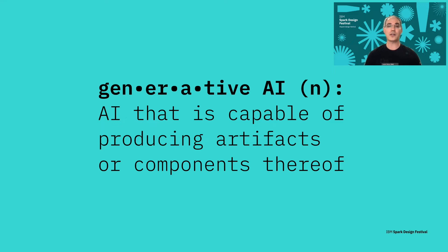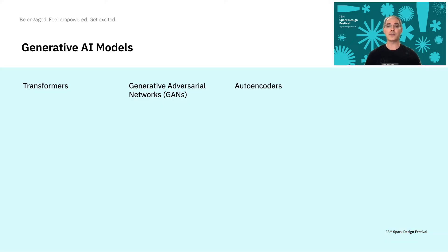As I mentioned, there are three popular kinds of generative models: transformer models, generative adversarial networks, and autoencoder models.